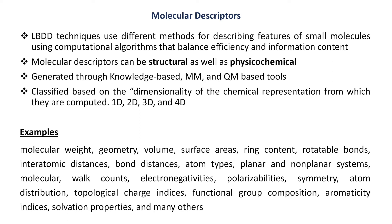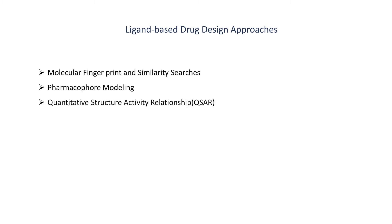Examples of molecular descriptors include molecular weight, volume, surface area, rotatable bonds, electronegativities, symmetry, functional composition, solvation properties, and many others. Coming to the methods available in ligand-based drug discovery, there are three: the first method is molecular fingerprint and similarity search, the second method is quantitative structure-activity relationship (QSAR), and the third method is pharmacophore modeling.